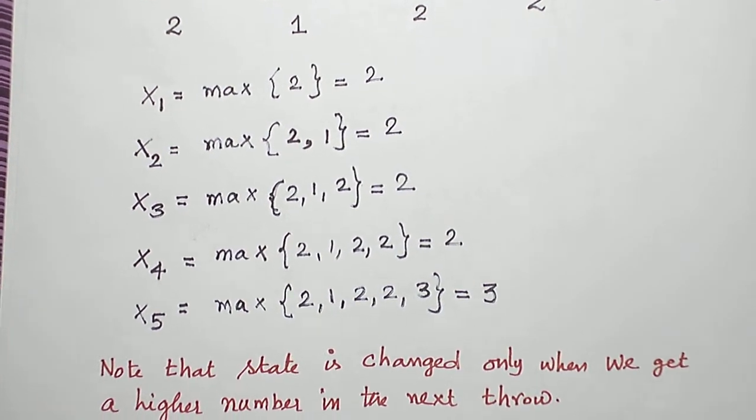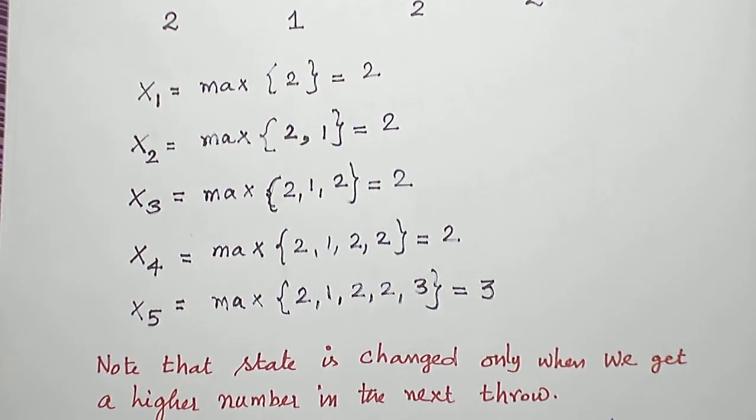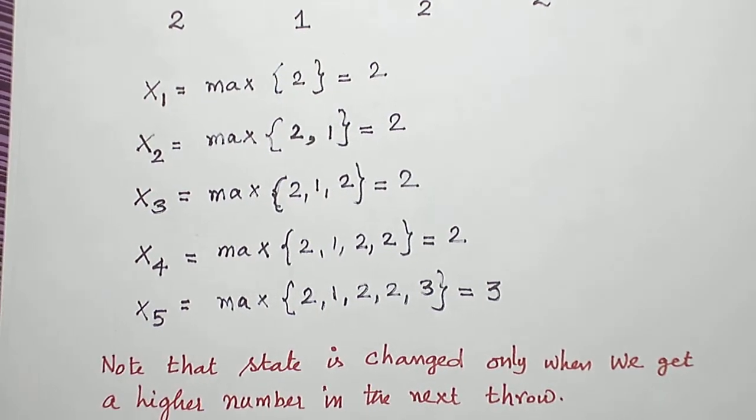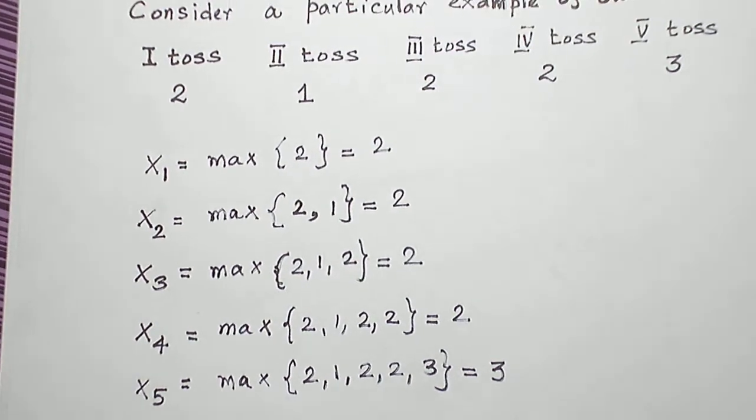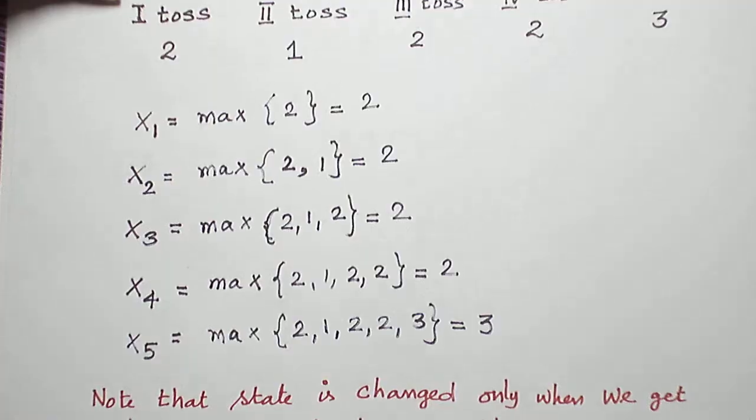So in other words, the state will change if we are getting higher numbers. Otherwise, the state will remain in the same position. Now let us see what happens at the end of the 6th toss.